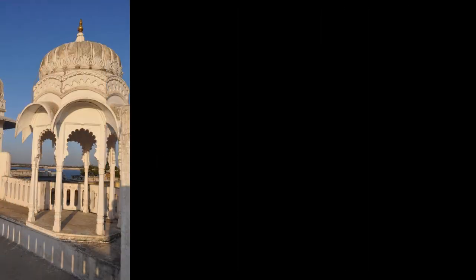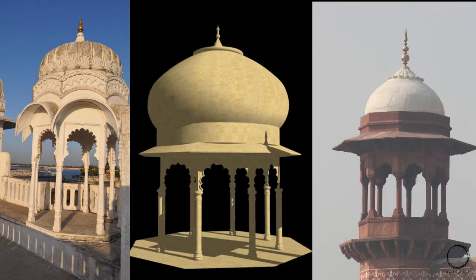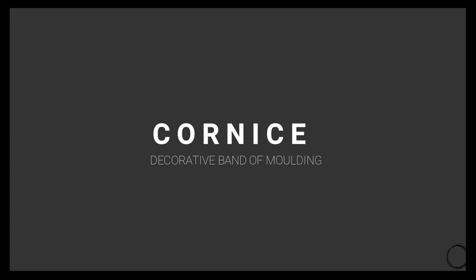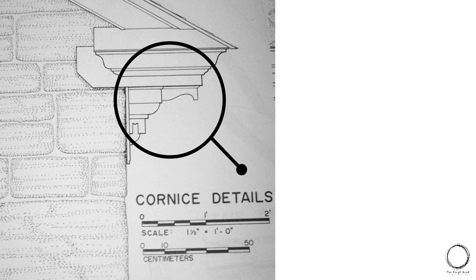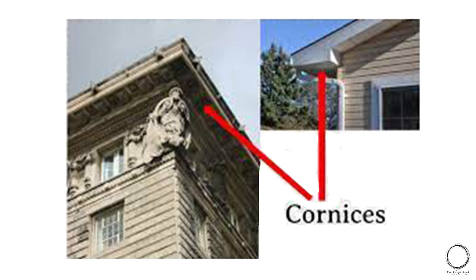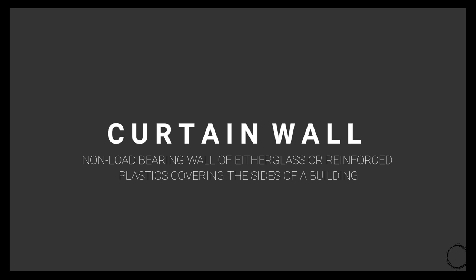Moving on, the next architectural term is chhatri, which means an umbrella-shaped pavilion. These are used in many of our monuments including the Taj Mahal, Humayun's Tomb, and the Lal Qila. These are small pavilions or gathering spaces for recreation. The next term is cornice, which means a decorative band of molding, as marked in the diagram — decorative bands at the ends of roofs.